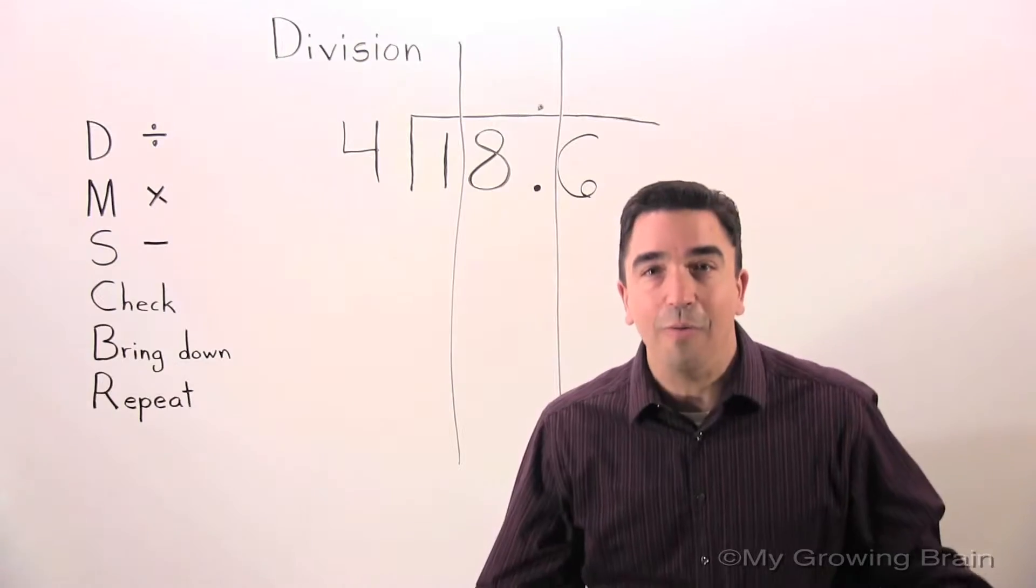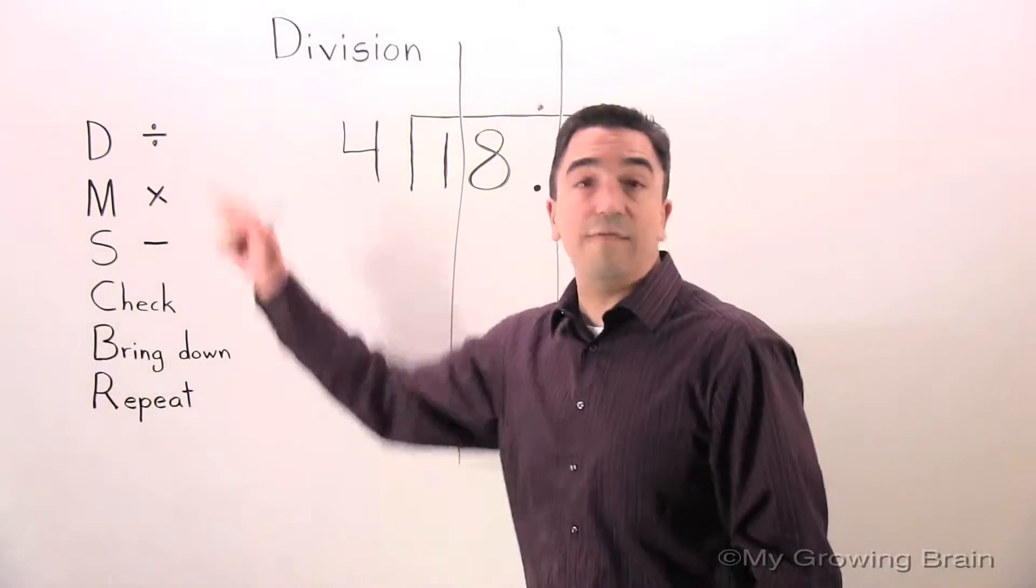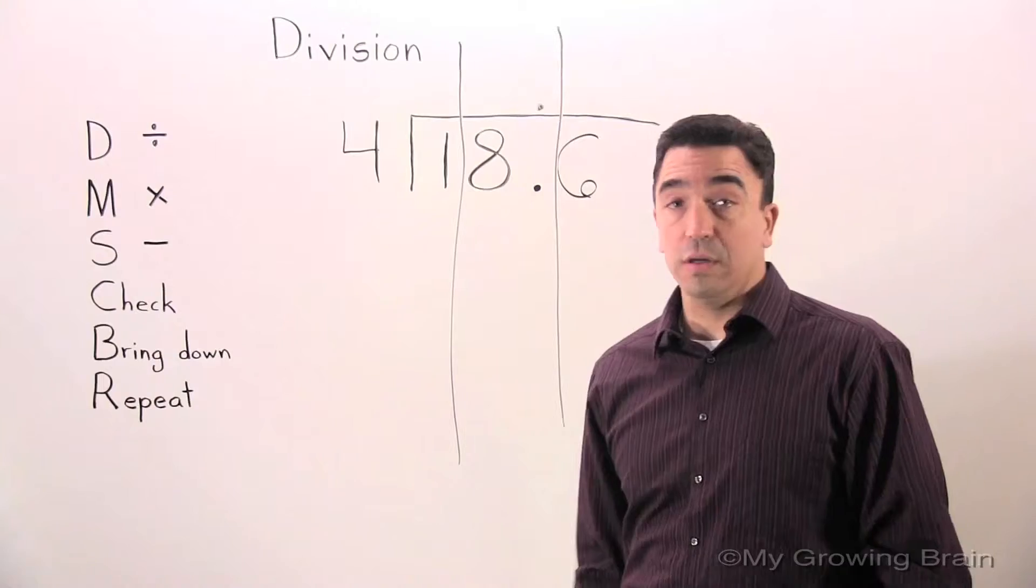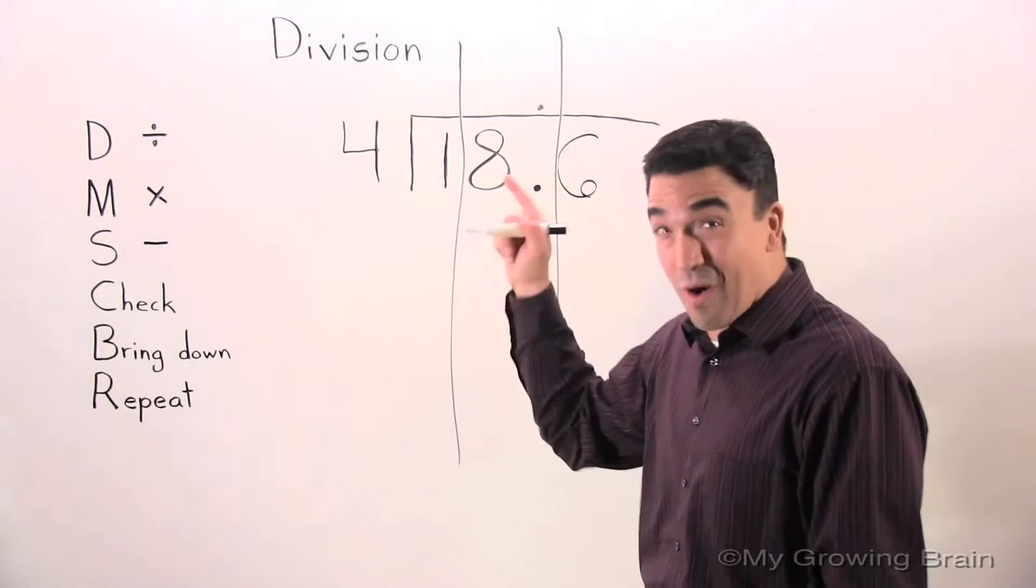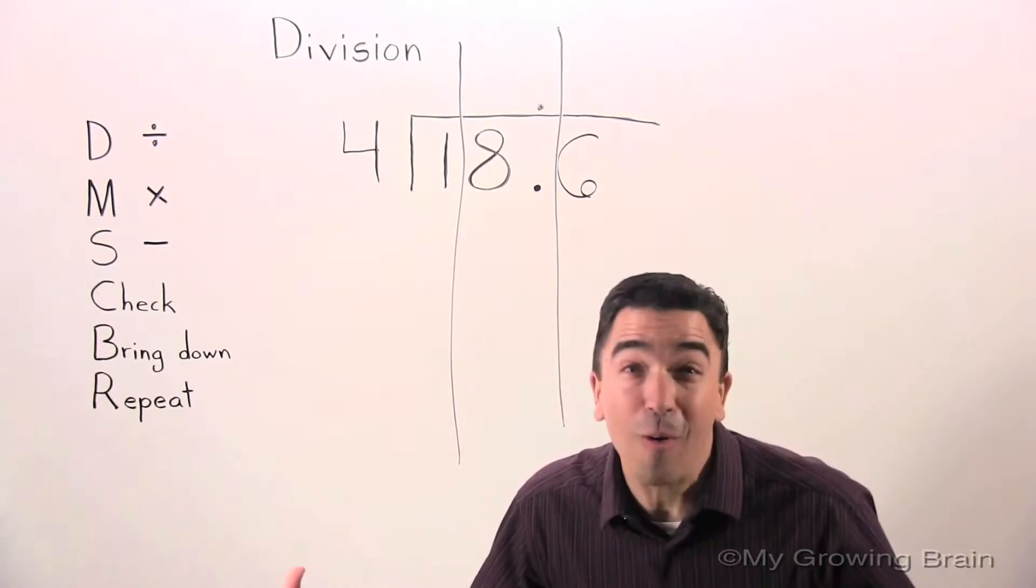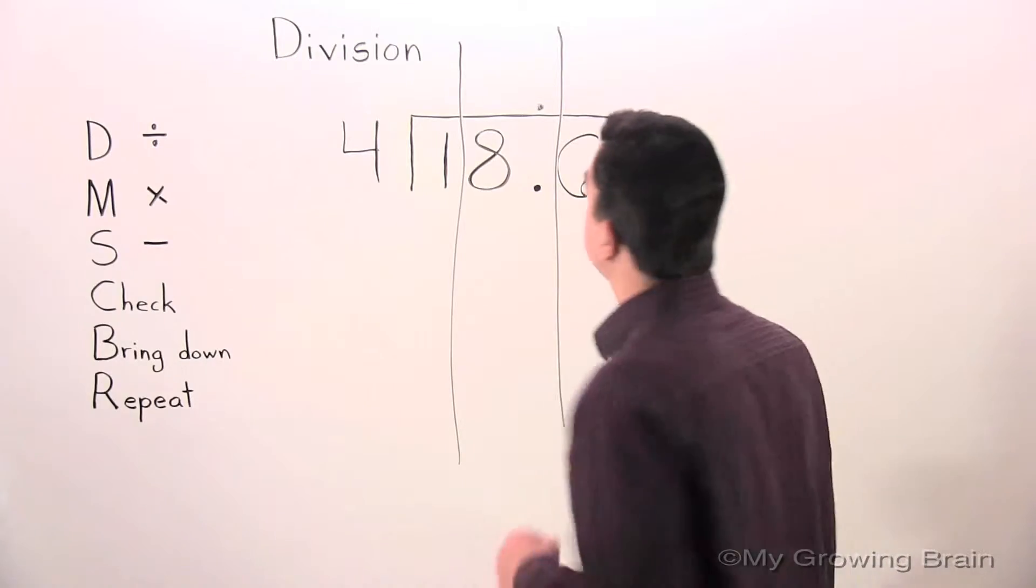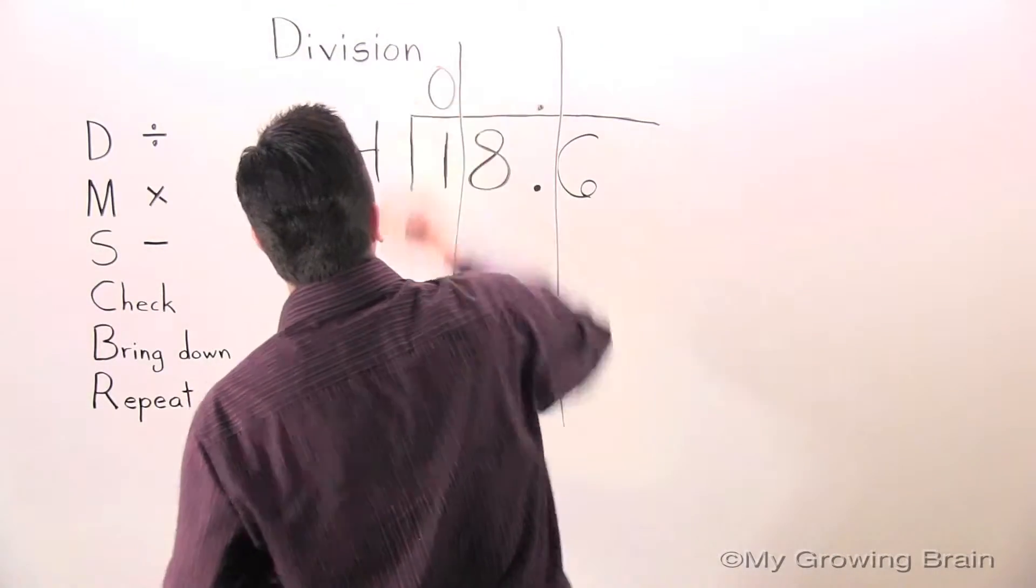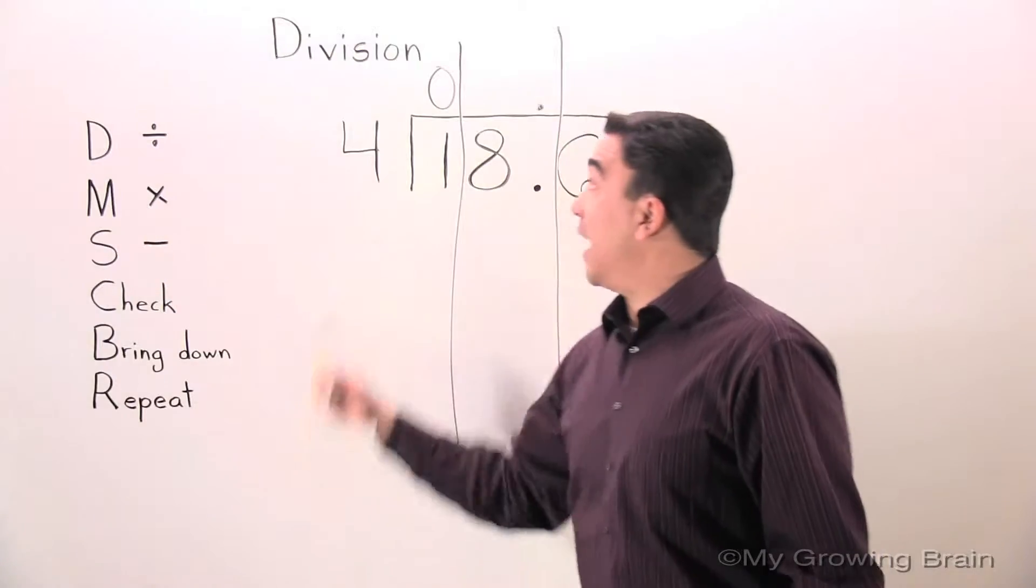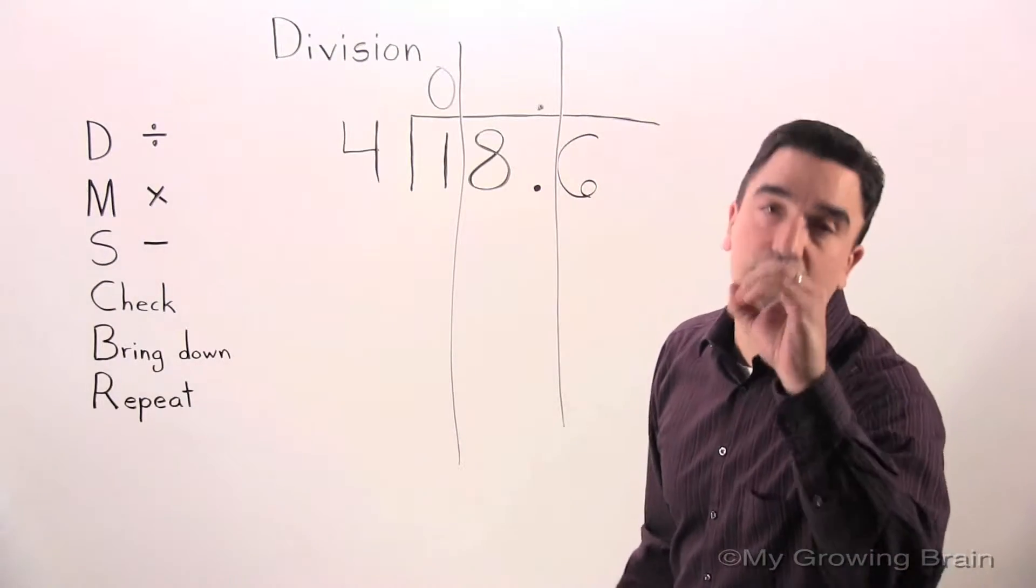We're ready to go. First step: divide. 1 divided by 4 or 4 into 1. Can't do it. Use a 0. Next step: multiply. 4 times 0 is 0.